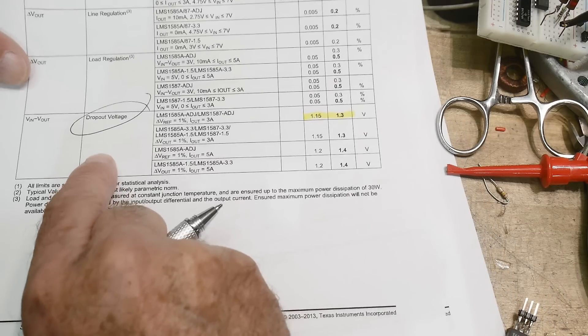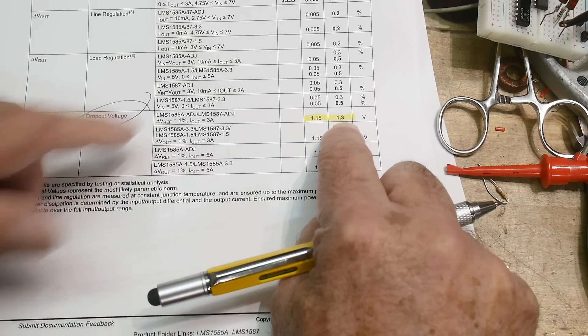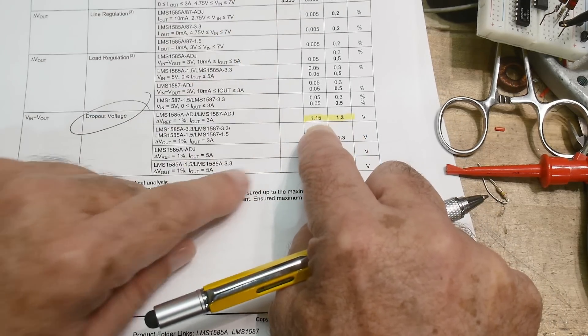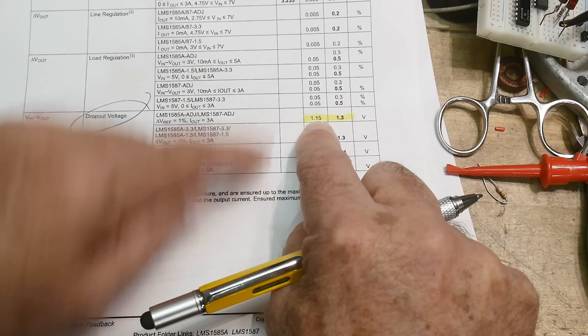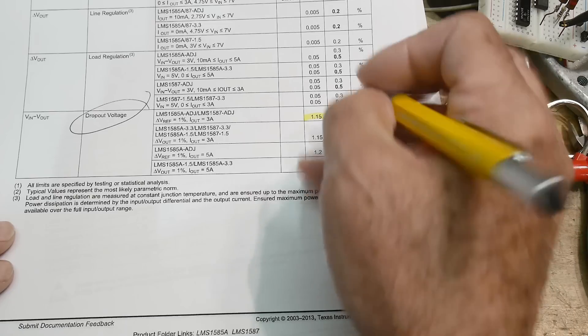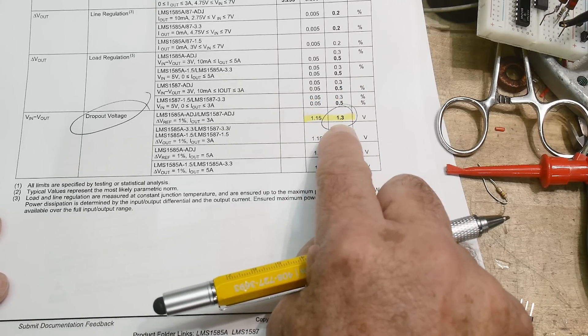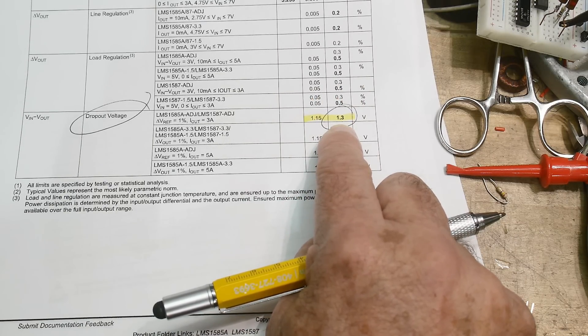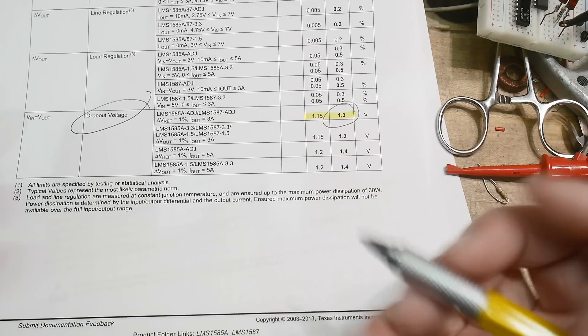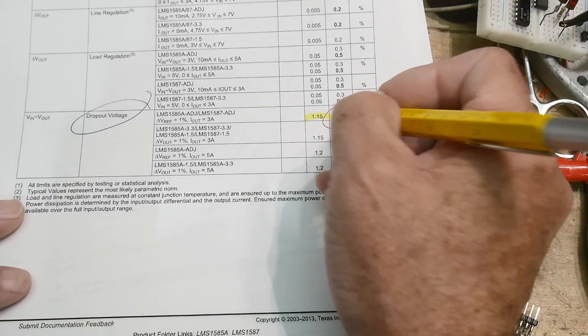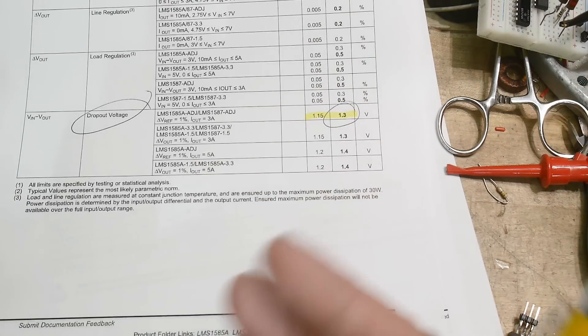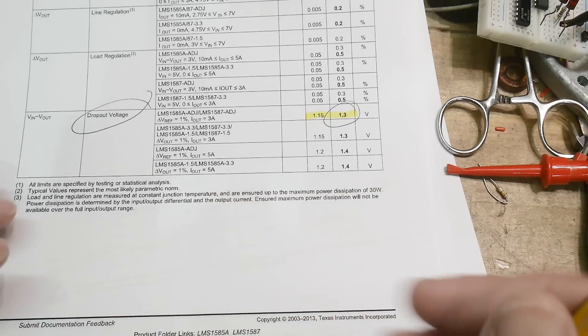So Vref is 1.25 volts. That's the same as a LM317. Here we go. Dropout voltage. So the dropout voltage is typically 1.15 volts and maximum is 1.3. So if you're designing a circuit and it has to work under all conditions, this one is guaranteed to 1.3. And the other one was guaranteed to 3 volts. So that's a big difference. The difference between 3 volts and 1.3 volts, especially for power management and conserving energy.